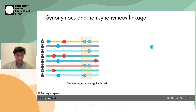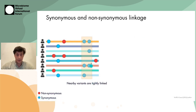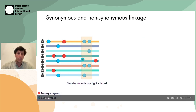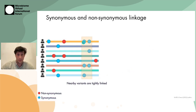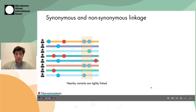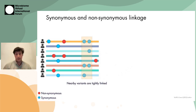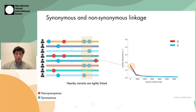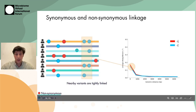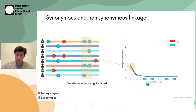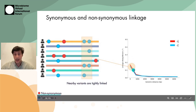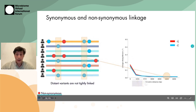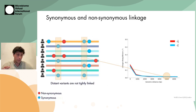Another important concept is linkage. Linkage is essentially: when one variant appears, how likely is it that another variant also appears on the same strain? In general, nearby variants — those physically close on the genome — tend to be tightly linked. We can quantify this using a metric called R-squared linkage disequilibrium. Variants that are physically close tend to have a high value of R-squared, while distant variants tend to have a low value, meaning knowing the identity at site one doesn't tell you much about site two.